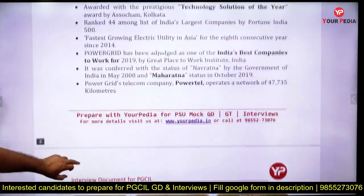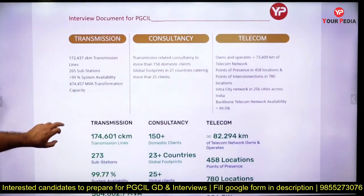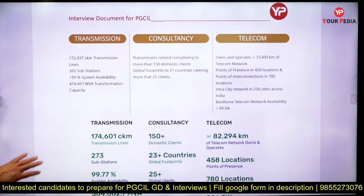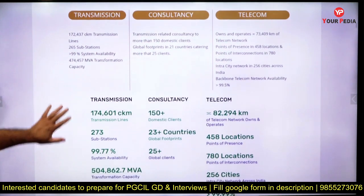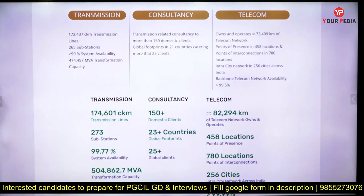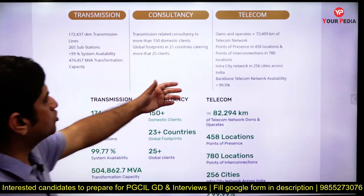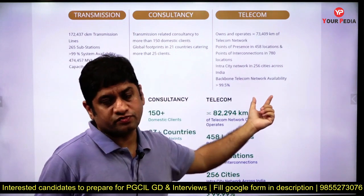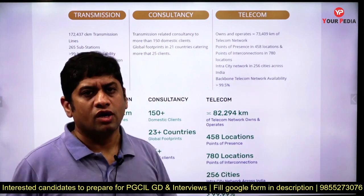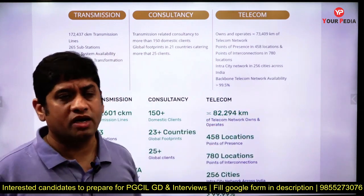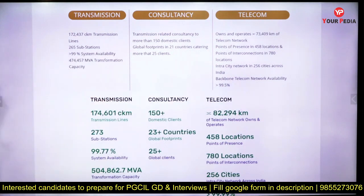They may ask you about PGCIL's business verticals. The main ones are transmission, consultancy, and telecom. It has different clients in different countries. Power Grid is also trying to enter the telecom domain — similar to how GAIL entered other sectors — because of its existing transmission infrastructure, telecom becomes a natural option.